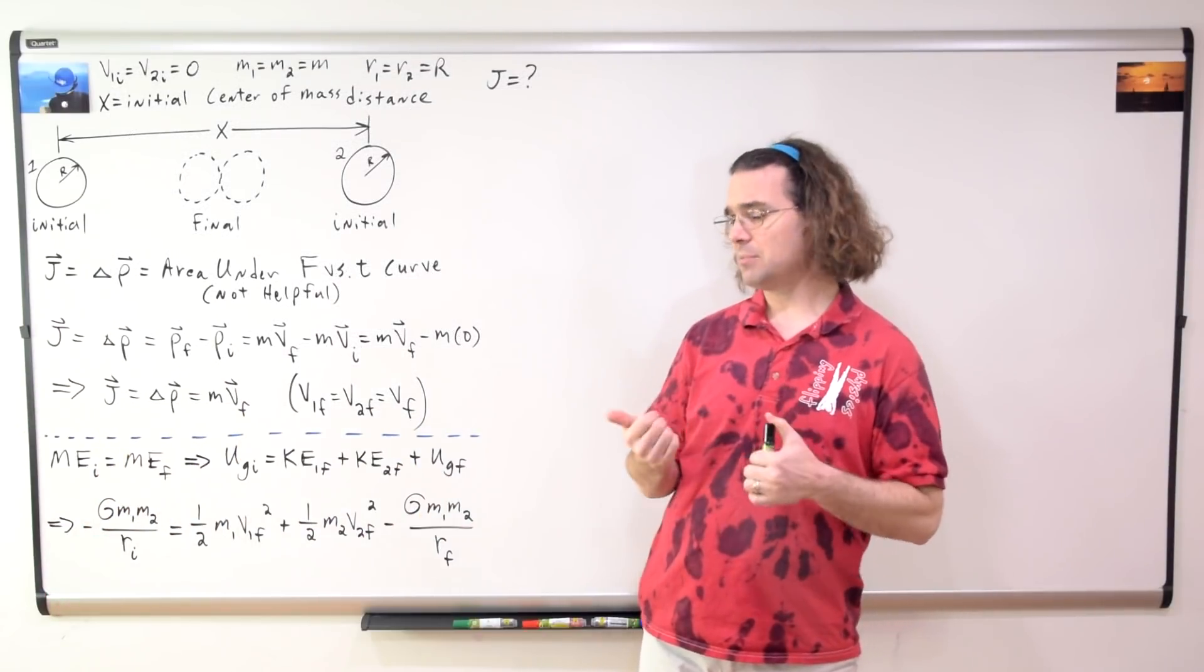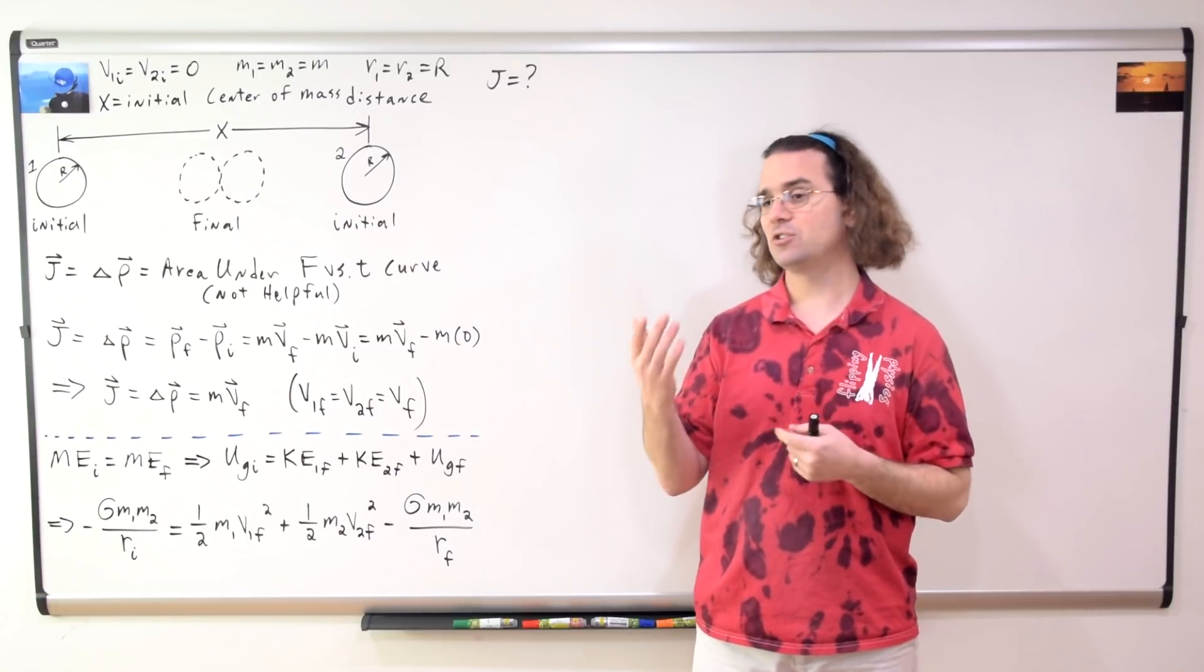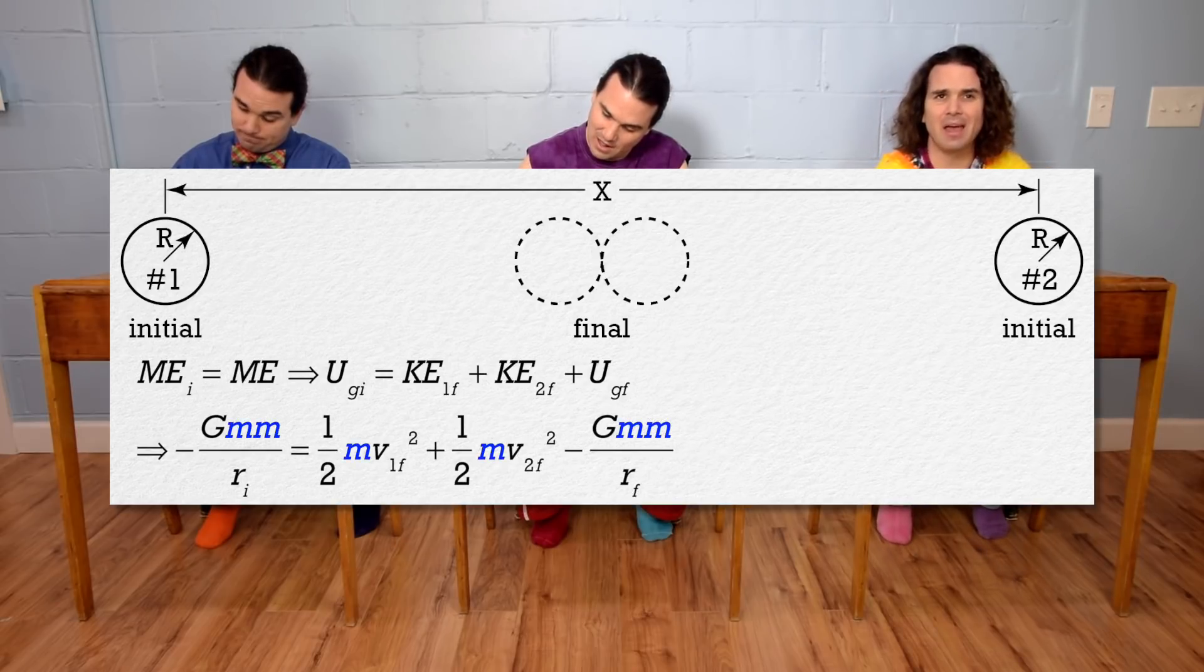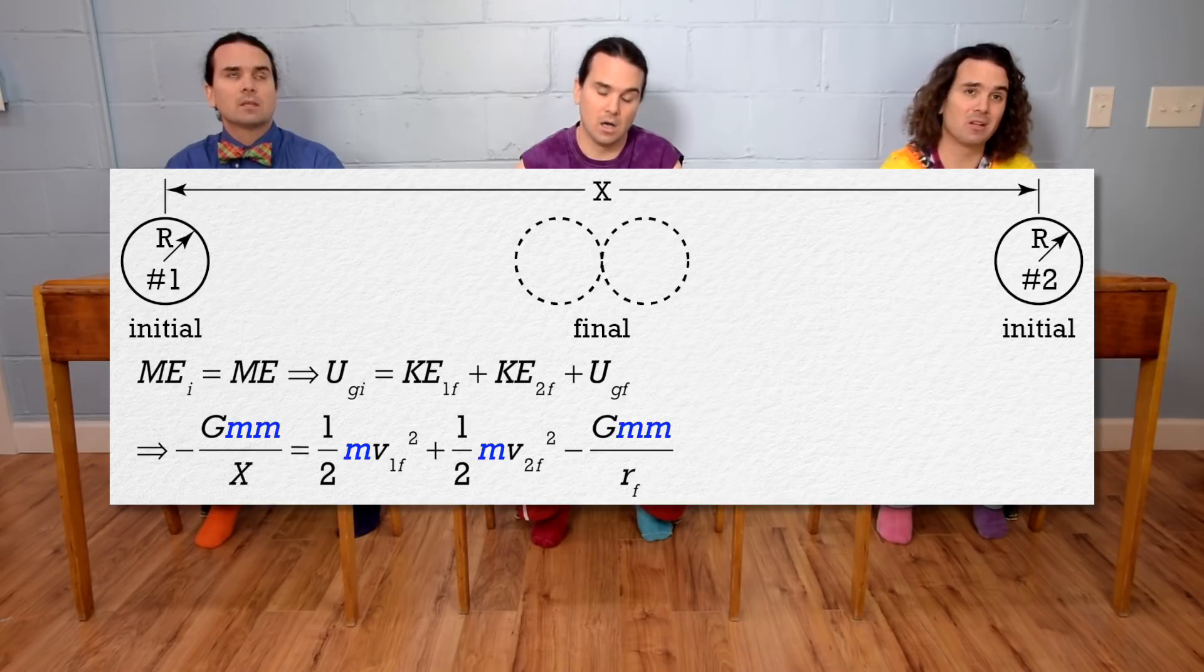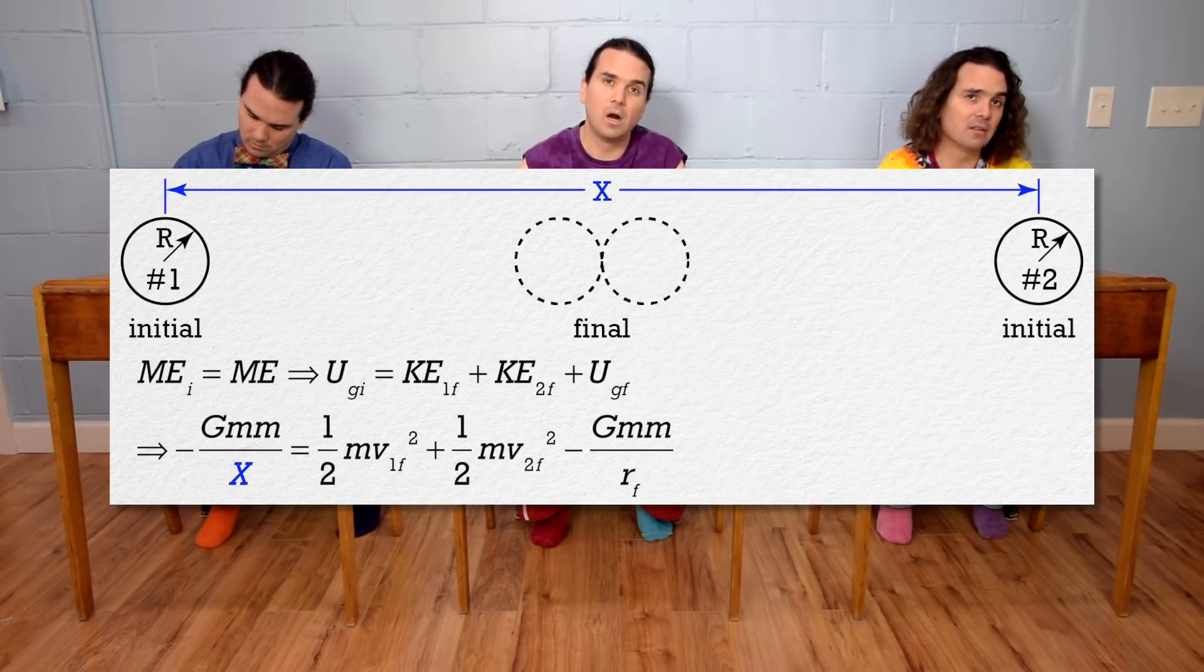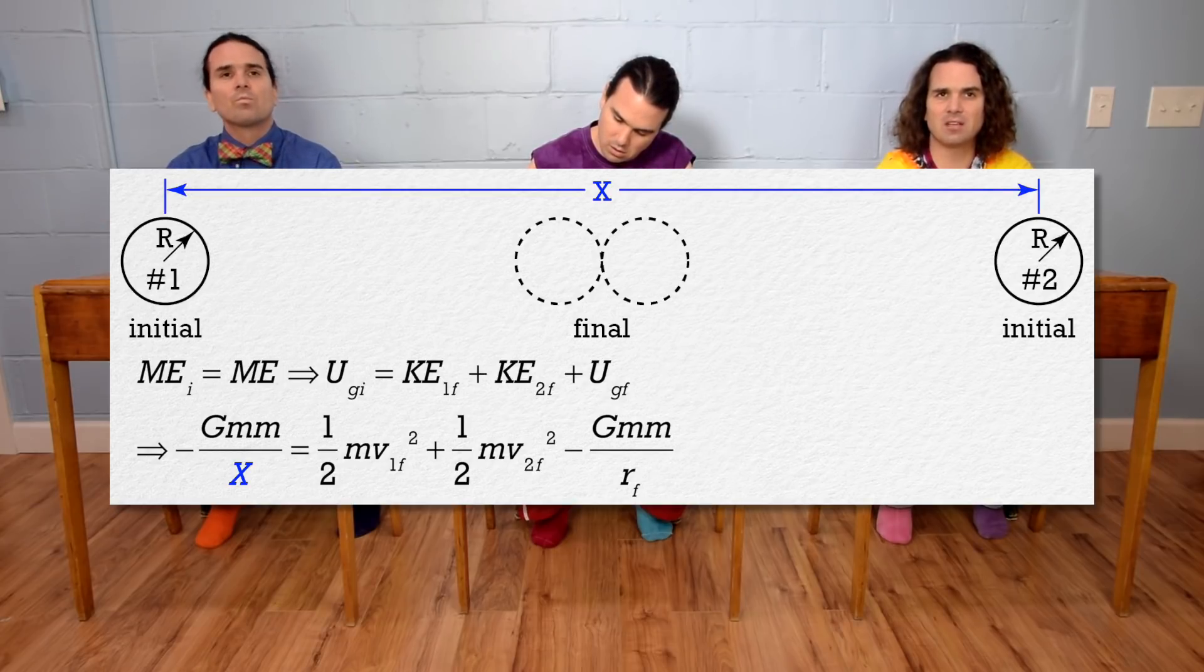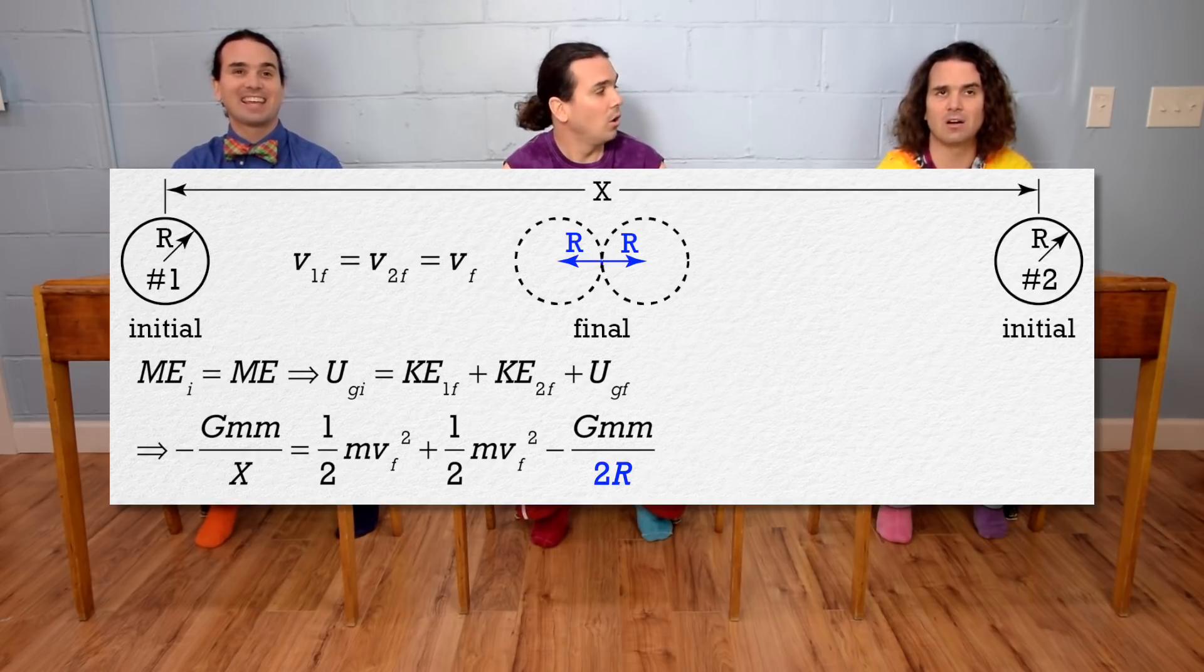Bo, please substitute in values and solve for the velocity final of each sphere. Sure. Mass 1 and mass 2 are both lowercase m. The initial center of mass distance between the two spheres is capital X. And the final center of mass distance between the two spheres is, well, it's right before they touch, so it will be two times the radius of each sphere, so two times capital R.